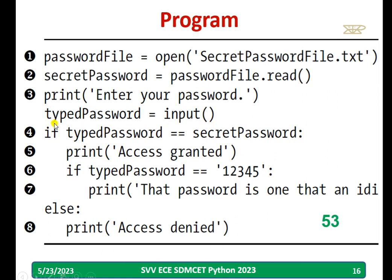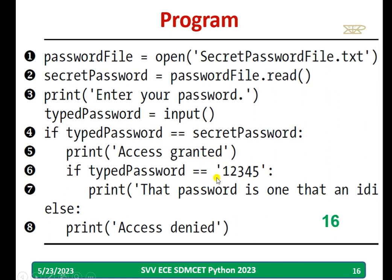In this program, 'password_file' equals open('secret_password_file.txt') — I am opening one file. 'secret_password' equals 'password_file.read()' — I am reading this file, and whatever is in it will be saved into 'secret_password'. Then the user enters a password; whatever the user types is saved into 'typed_password'. I am comparing both the typed password and the secret password — if both match, access is granted. If somebody types something like 12345 and that matches, access is granted. Otherwise, if something other than the correct password is typed, access is denied.